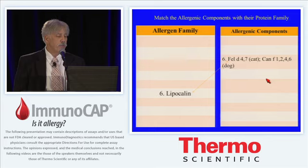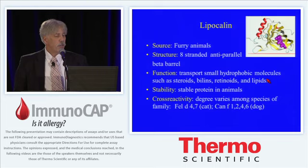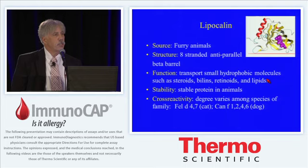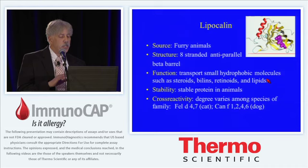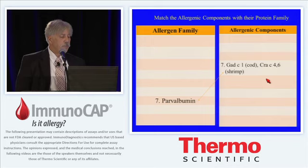The next family are the lipocalins, the model being cat and dog: Fel-D4 and 7, and CanF1, 2, 4, and 6. These lipocalins are found pretty strictly in furry animal sources, and they transport small hydrophobic molecules such as steroids, retinoids, and lipids. They're stable proteins in animals, and the degree of cross-reactivity does vary among the families.